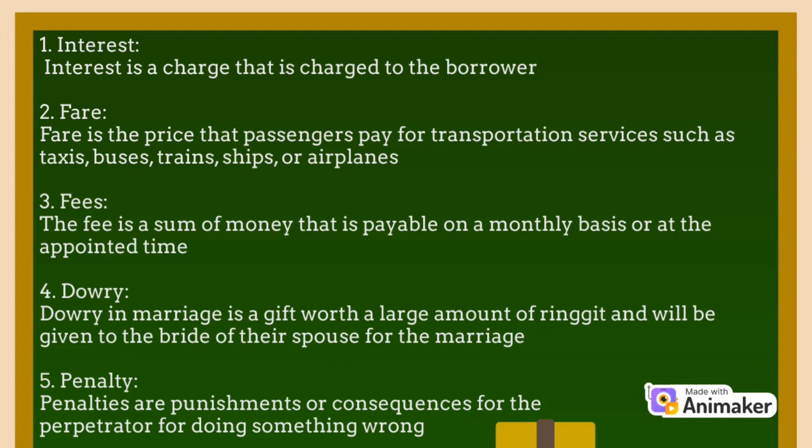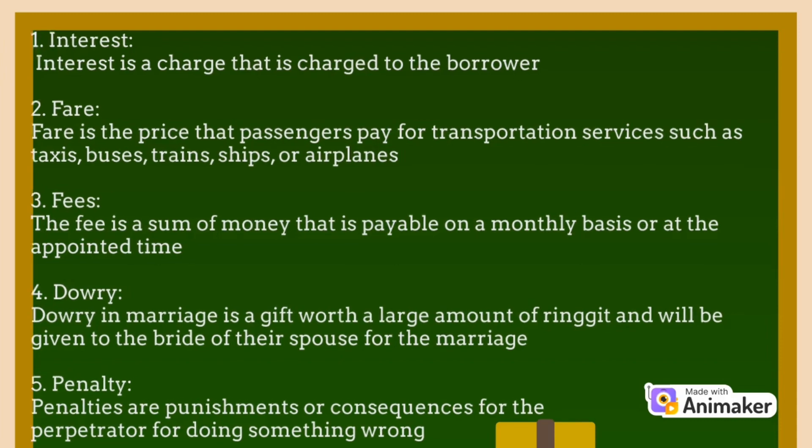Next, is penalty. Penalties are punishments or consequences for the perpetrator for doing something wrong. Other than that, we also have fines, terms, premiums, wages, salary, bribe, and the last one for price nicknames, our bill.